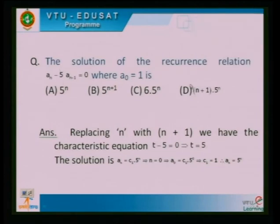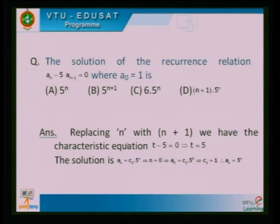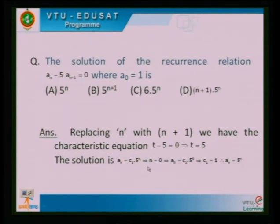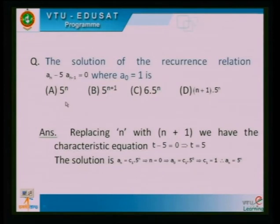Next, we go to a recurrence relation example. The solution of the recurrence relation aₙ = φ·aₙ₋₁, where a₀ = 1. Replacing n with n+1: aₙ₊₁ = φ·aₙ. Let aₙ = t; then t − φ = 0, so t = φ. Therefore aₙ = c·φⁿ. Substituting n = 0: a₀ = c·φ⁰ = c = 1. Therefore aₙ = φⁿ — multiplying φ·φ·φ... n times gives φⁿ. The first option is the solution.